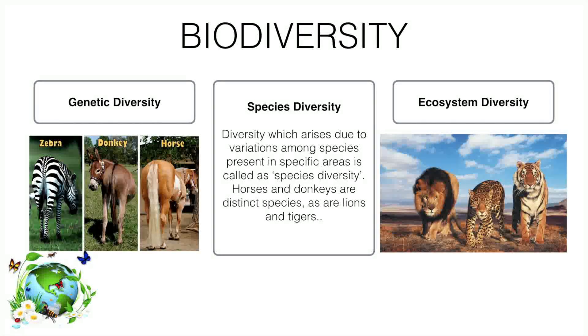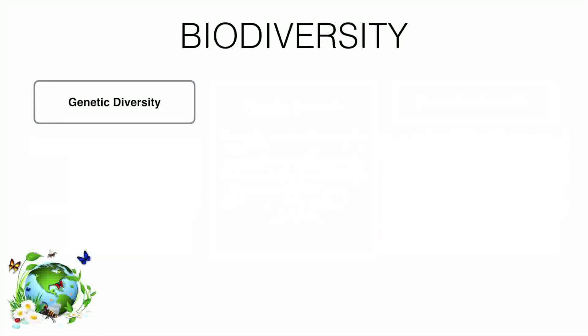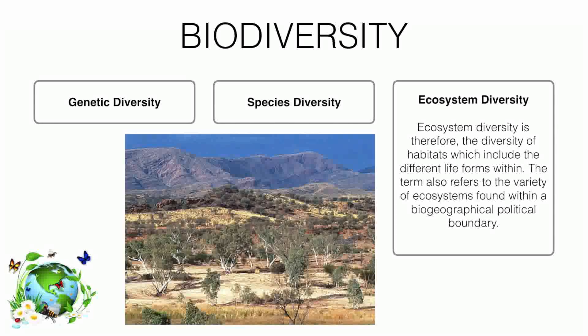The next one is ecosystem diversity. That means in an ecosystem, what are the different varieties of animals and plants living there? Those will be considered as ecosystem diversity.